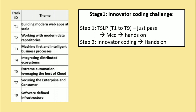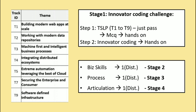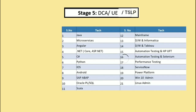Stage 2 is Business Skills. There are two to three variations — Business Skills 1, Business Skills 2, and Business Skills 3 — and you can choose any one. You must get a distinction, which is more than 70 percent. Similarly, you must choose any one Process and any one Articulation, and you have to get distinction in those as well.